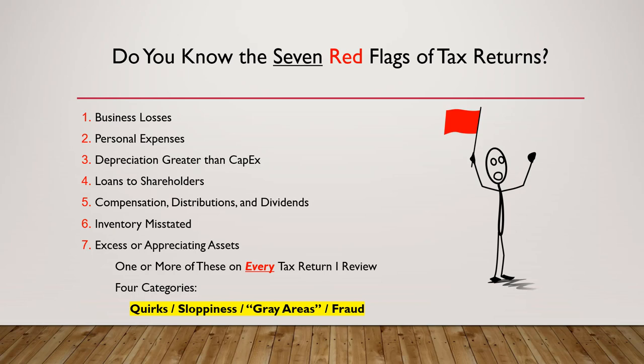I see one or more of these on every tax return I review. They generally fall into one of four categories: quirks — things in the tax code that don't translate well into the attorney's world; sloppiness — from the business owner or from the accountant; gray areas in tax law that are subject to interpretation; and flat-out fraud.